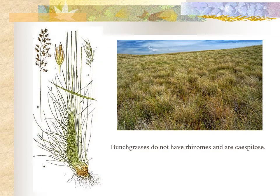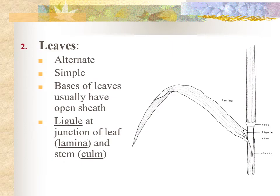Conversely, many grasses do not have rhizomes or stolons. Instead, they form clumps and are generally known as bunch grasses. For the leaves, grasses usually have alternate simple leaves with a sheathing leaf base. This sheath is often open but is sometimes closed, and this can help key out the correct species. One important structure in the Poaceae is the ligule, a structure present at the junction of the leaf blade and the stem, which can be either membranous or hairy.